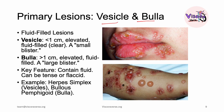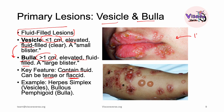A vesicle and bulla are both fluid-filled lesions. Just like the lesions we've discussed, the difference is size: a vesicle is less than one centimeter and a bulla is more than one centimeter. Both are elevated and fluid-filled; they could be tense or flaccid, hard to rupture or easily ruptured. A classic example of vesicles is HSV-1, which causes very tiny lesions less than one centimeter. A classic example of a bulla is bullous pemphigoid, an autoimmune disease causing large blisters.